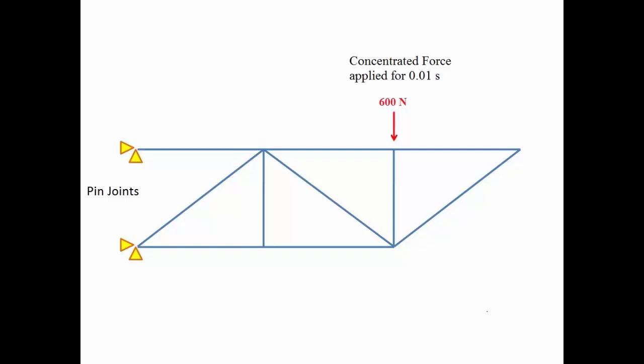The truss structure is fixed at one end with pin joints, which means it cannot move in the x or y direction. However, it is free to rotate about the z-axis. A concentrated force of 600 newtons is applied at one of the nodes for 0.01 seconds.